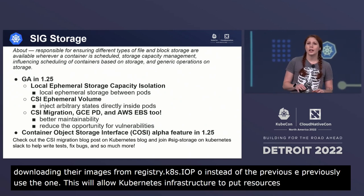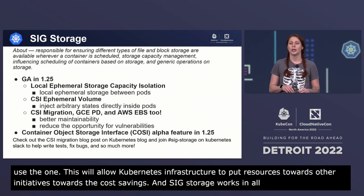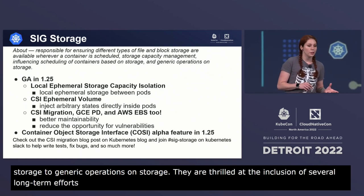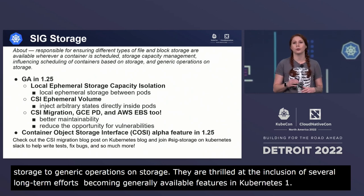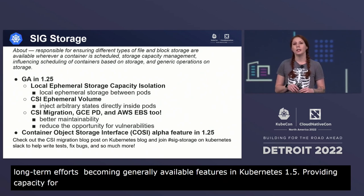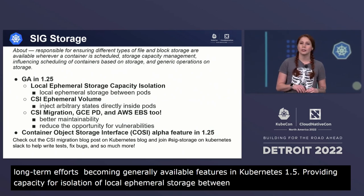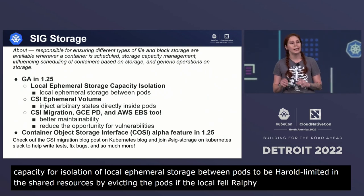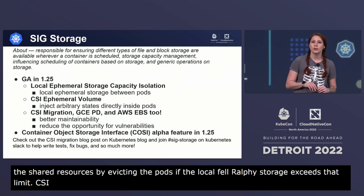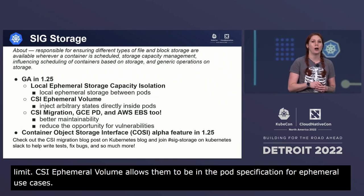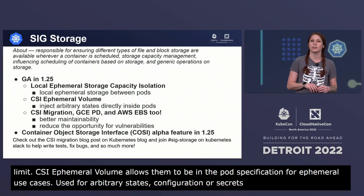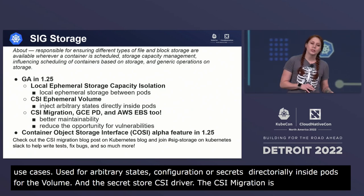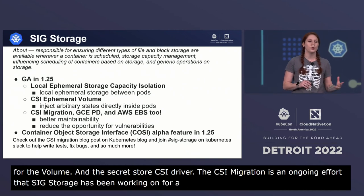SIG storage works in all areas of storage from file and block store to generic operations on storage. They are thrilled at the inclusion of several long-term efforts becoming generally available features in Kubernetes 1.25. The local ephemeral storage capacity isolation feature provides support for capacity isolation of local ephemeral storage between pods, so that a pod can be hard limited in its consumption of shared resources by evicting pods if consumption exceeds that limit. The CSI ephemeral volume feature allows CSI volumes to be specified directly in the pod specification for ephemeral use cases, and can inject arbitrary states such as configuration or secrets directly inside pods using a mounted volume.